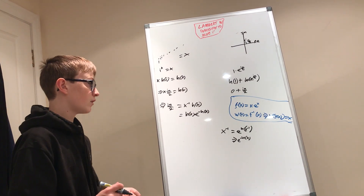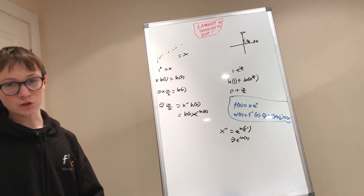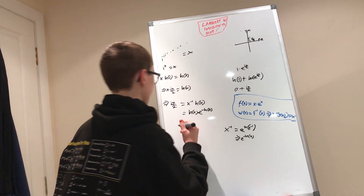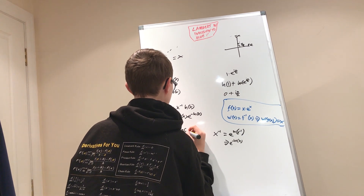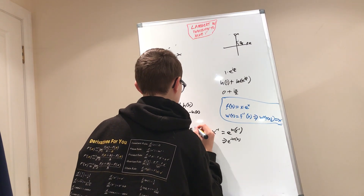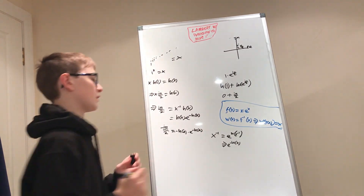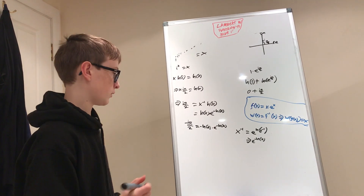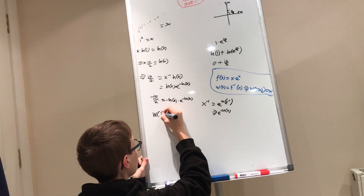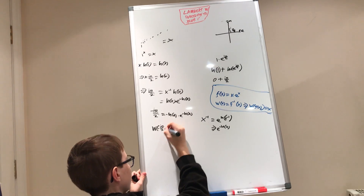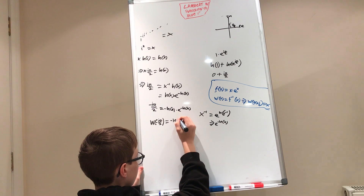To get this ln(X) to be negative, just multiply both sides by negative one. So negative i·pi over two equals negative ln(X) times e to the power of negative ln(X). Now we're ready to use the Lambert W function. So the Lambert W function of negative i·pi over two equals negative ln of X.